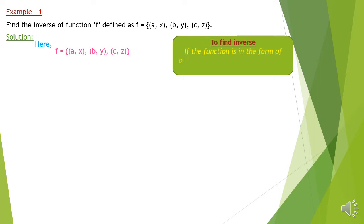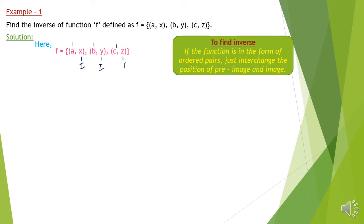To find the inverse, if the function is given in the form of ordered pairs, just interchange the position of pre-image and image. Before we interchange, we must know what is pre-image and what is image. The x-parts — a, b, and c — are antecedents and these are pre-images. The x, y, and z parts are consequents and these are images.